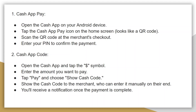Open the Cash App on your Android device, then tap the Cash App Pay icon on the home screen. It looks like a QR code. Next, scan the QR code at the merchant's checkout. After that, enter your PIN to confirm the payment.